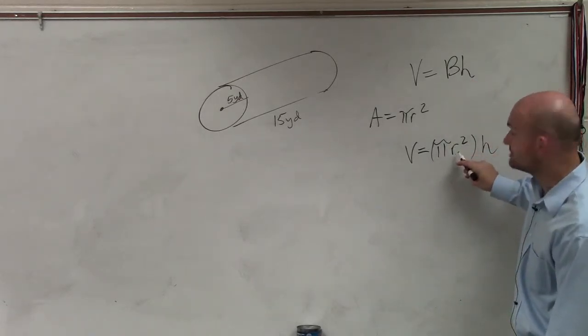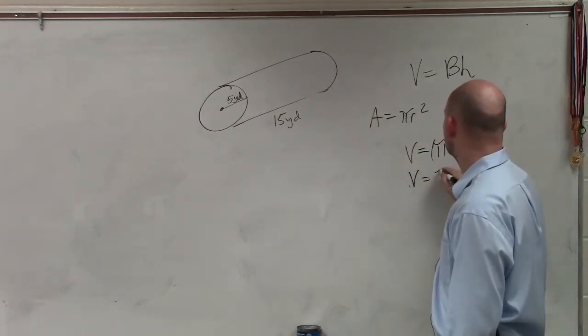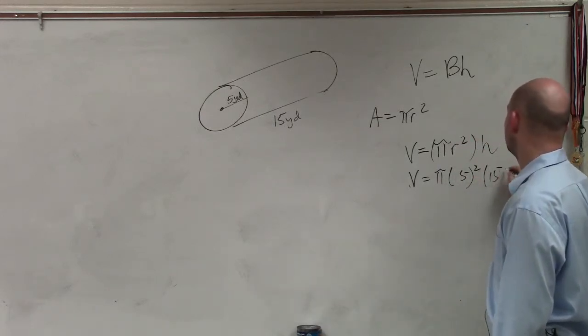Now we know what the radius is, which is 5, and we know the height, which is 15. So volume equals pi times 5 squared, bless you, times 15.